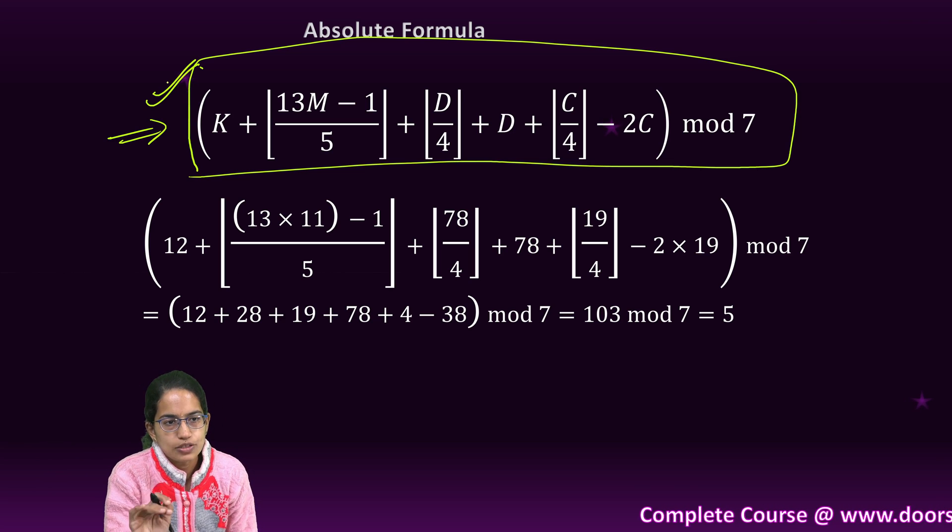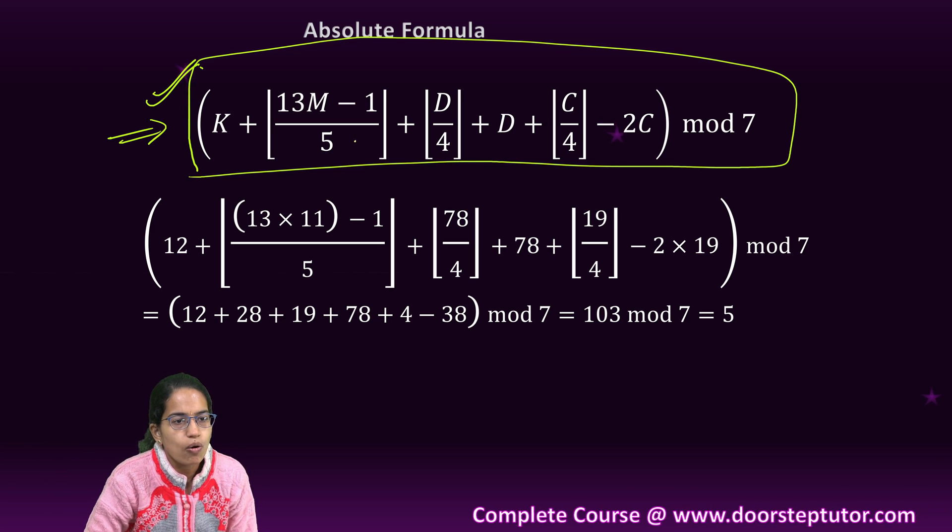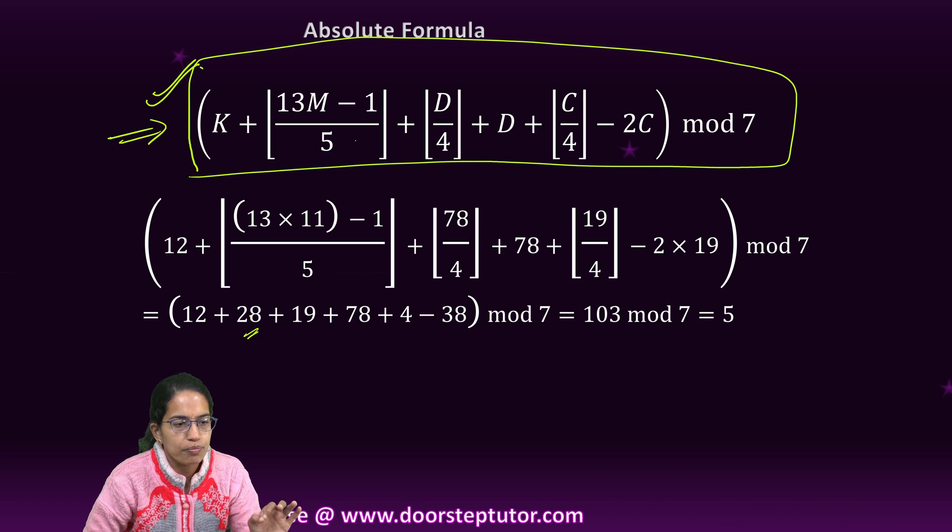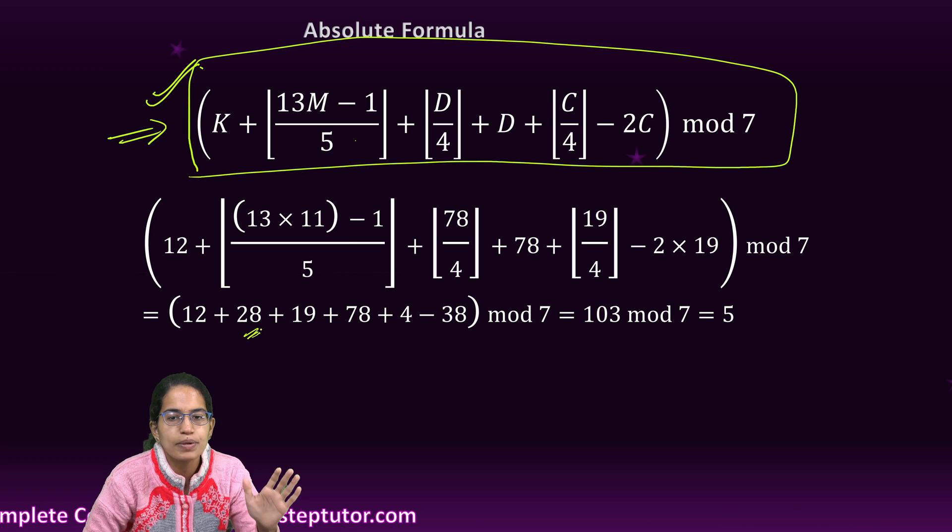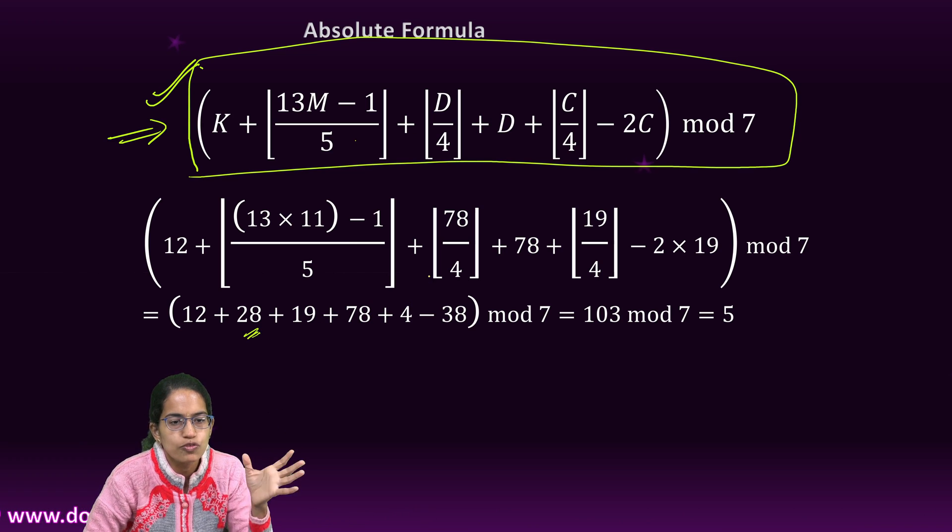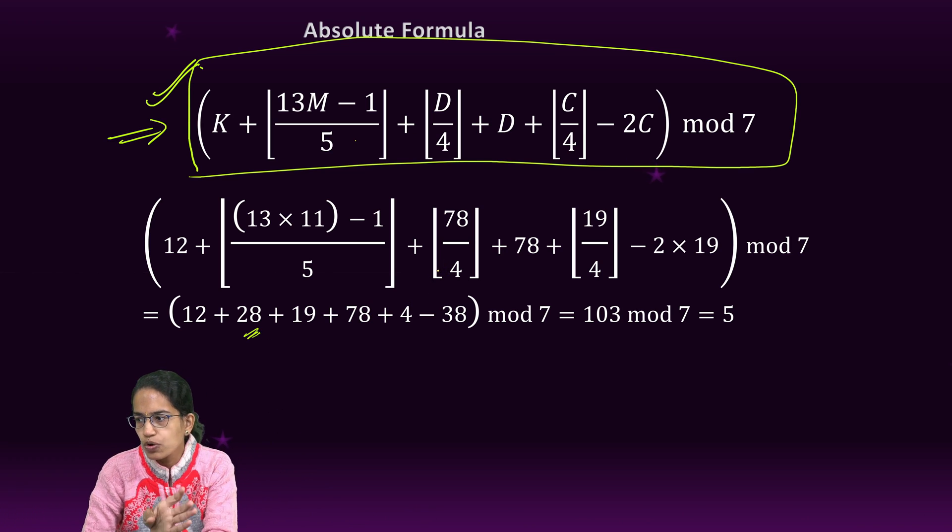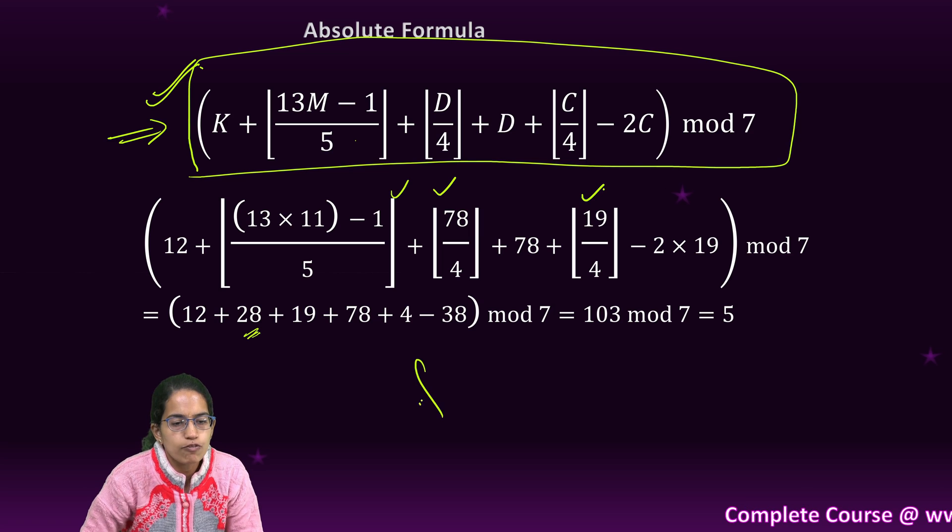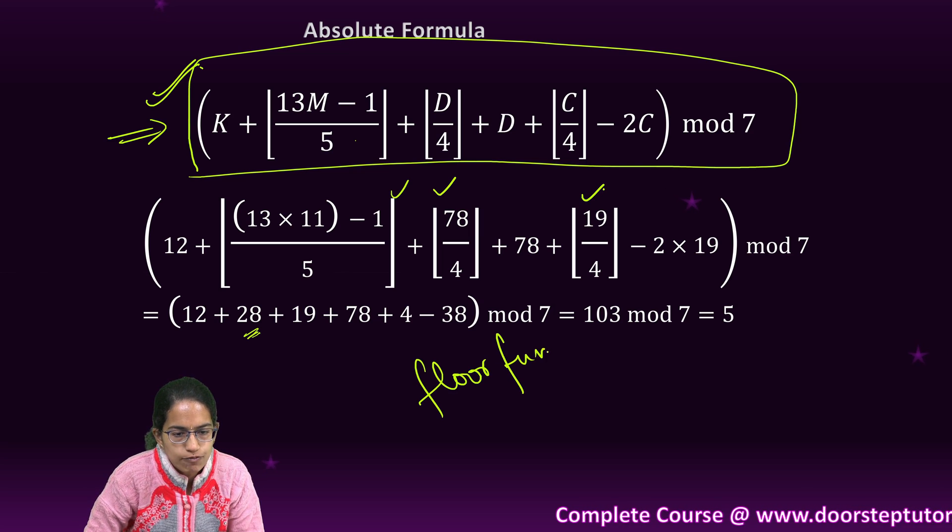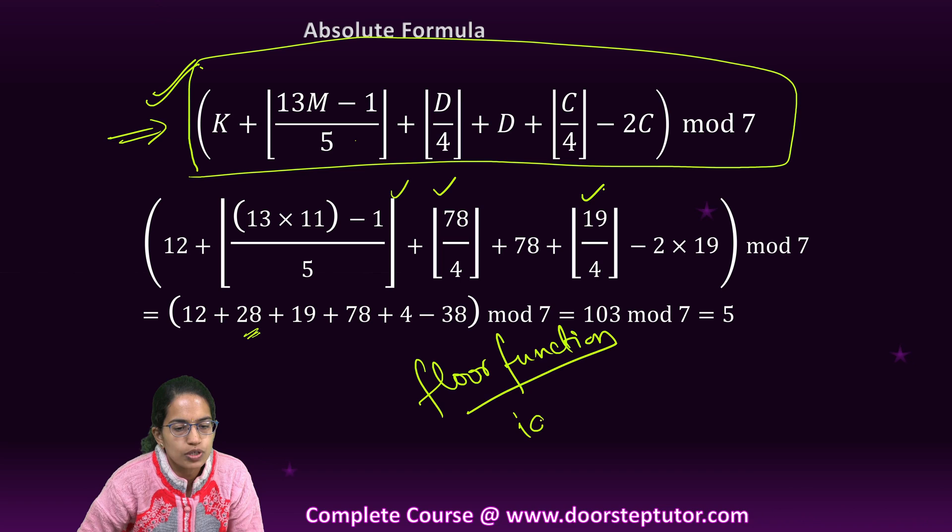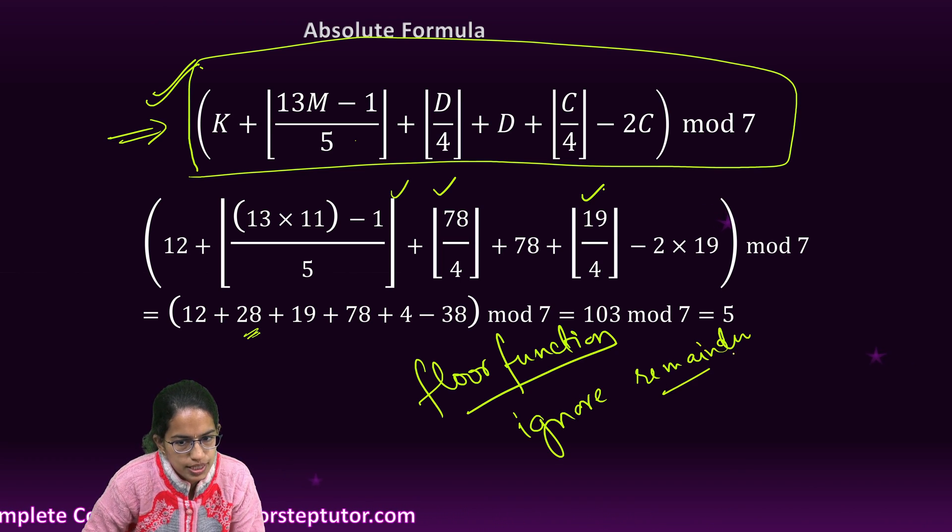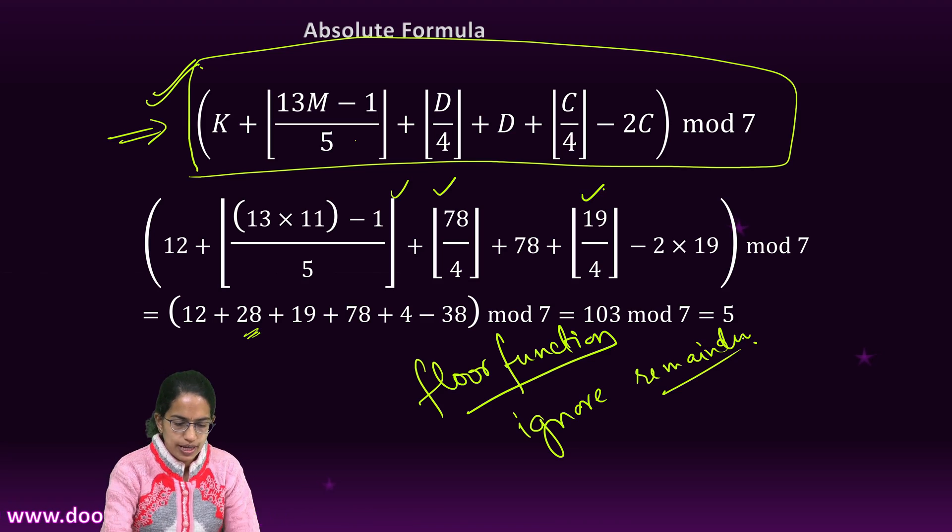So this is the formula that you would have to remember. Remember all the values here. Like here, the answer was 28.4, but we have taken 28—why? Because the remainders have been removed. We are taking this as a floor value. Since the floor function is taken, floor function ignores the remainder. When I say floor function, what does that mean? Floor function would ignore the remainder. So this is how we find out the absolute value.